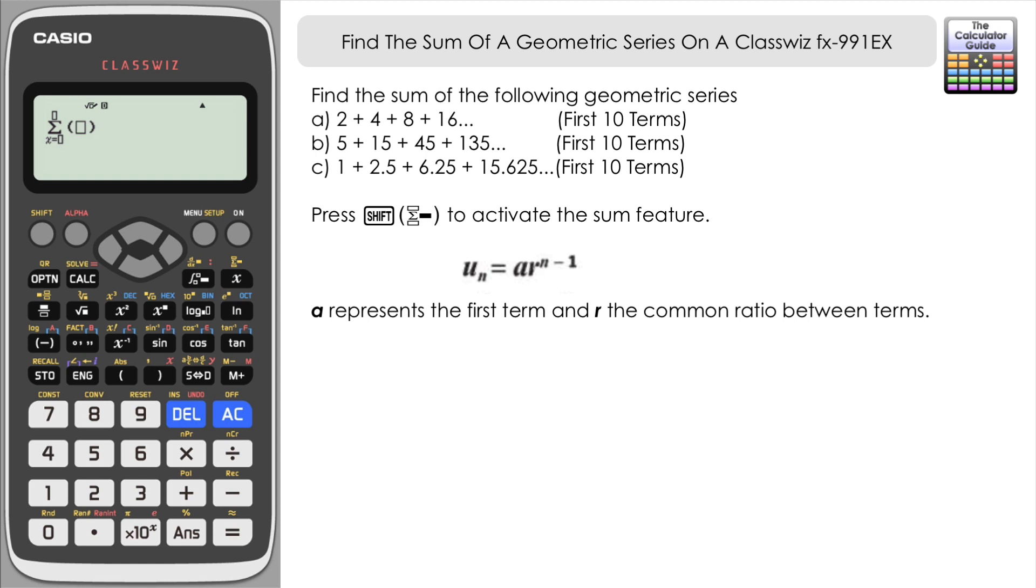So in the first example we have an A of 2. That's the first term in the series. And the common ratio, well we've got to think about what would multiply each term to get the next term. So 2 times 2 would give us 4, 4 times 2 would give us 8 and so on. So the common ratio between each of the terms is 2. If you weren't sure you could take a term and divide it by the previous term to find that. So for example 8 divided by 4 would give you 2, 16 divided by 8 would give you 2. So the common ratio is 2 in this case.